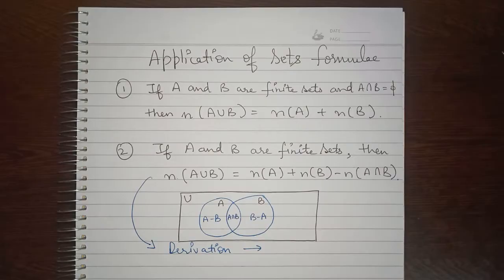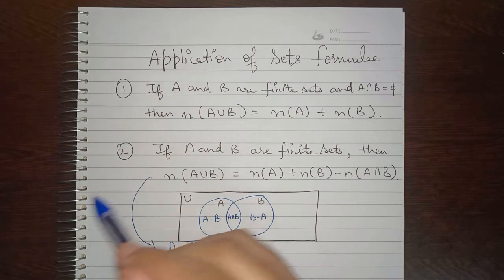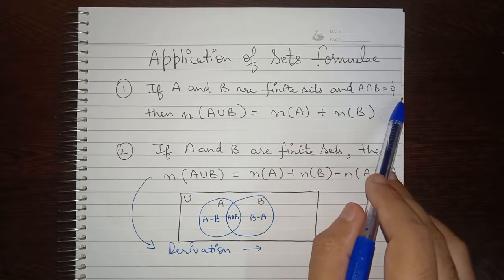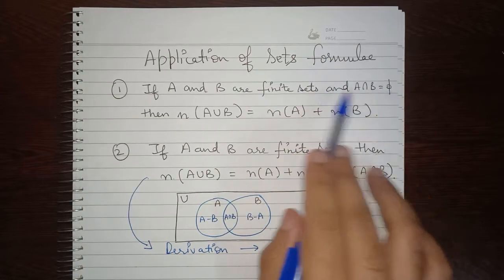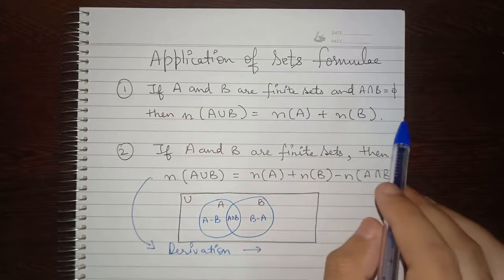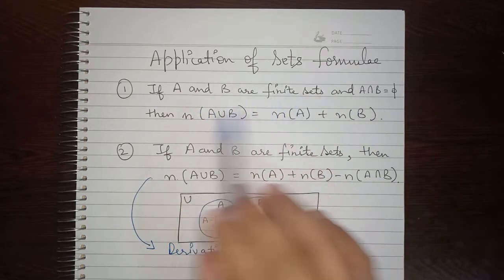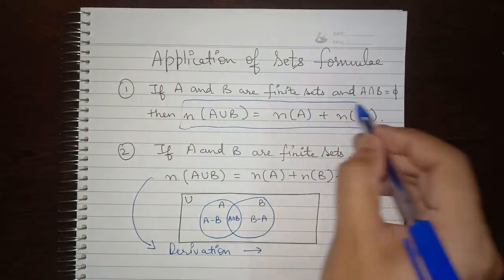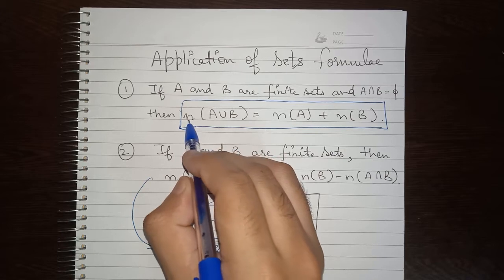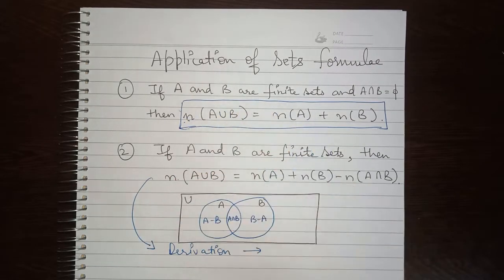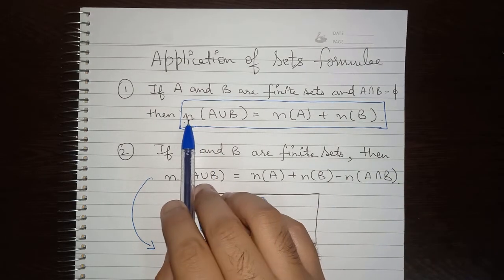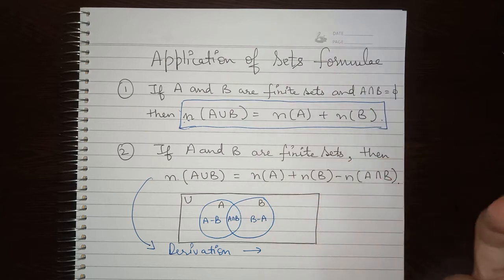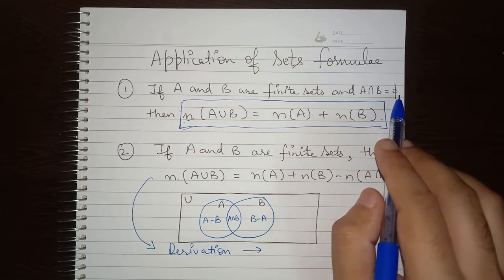Now let's cover the basic formulas we will use in the application of sets. The first formula: if A and B are finite sets and A intersection B is null — meaning A and B are disjoint sets — then the number of elements in A union B equals the number of elements in A plus the number of elements in B. This is common sense given that A and B share no elements.